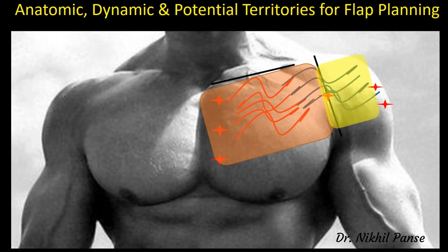If we go beyond the delto-pectoral groove, that territory becomes the dynamic territory. The dynamic territory always develops after the flap is harvested. After harvest, the cutaneous supply through the thoracoacromial branches is cut off, and the flap is now predominantly supplied by the internal mammary artery with its connections with the thoracoacromial axis branches. Beyond the delto-pectoral groove, the ratio of flap extension should be 1:1, and commonly 3 to 4 centimeters beyond the delto-pectoral groove can be safely harvested.